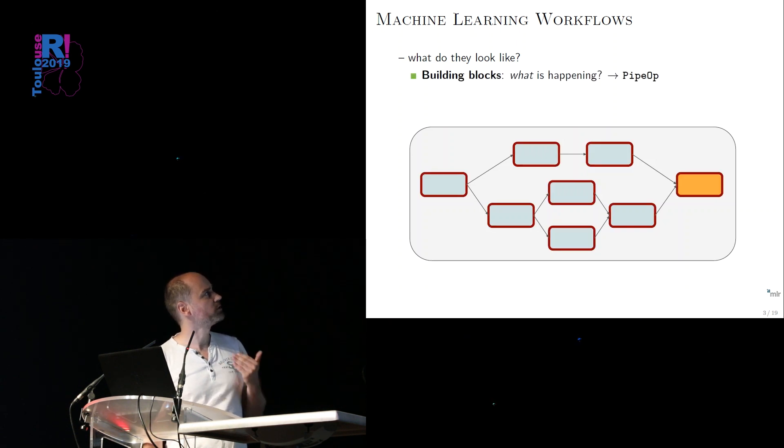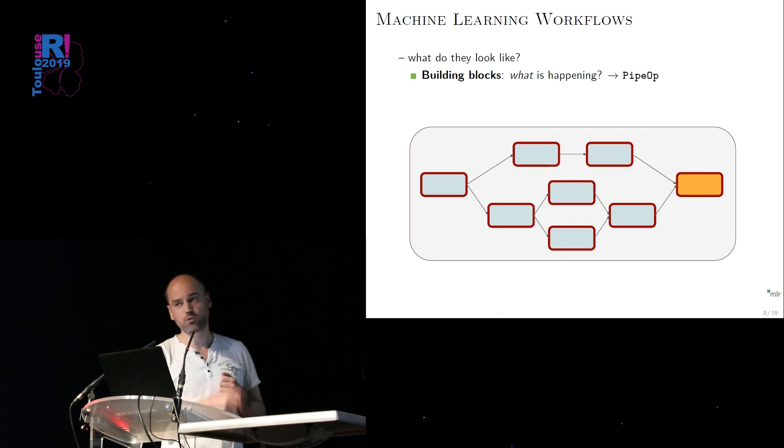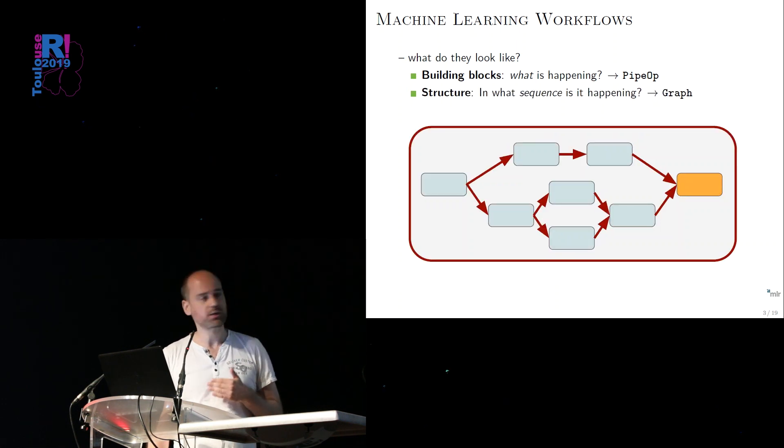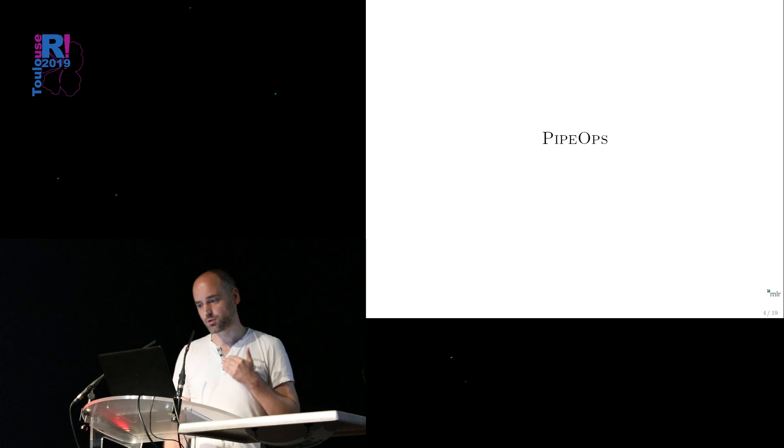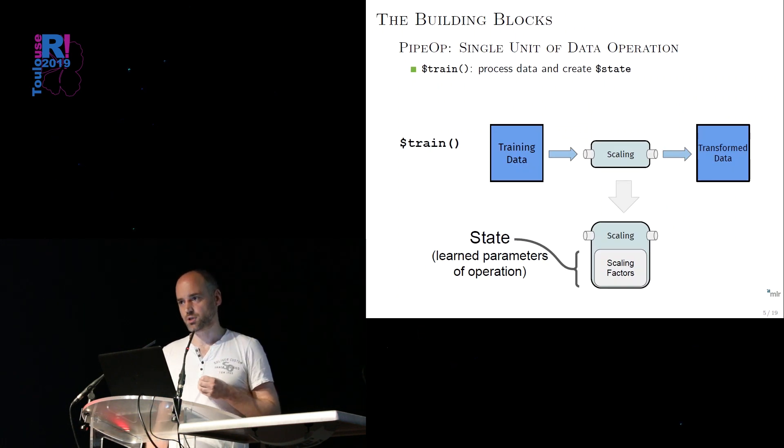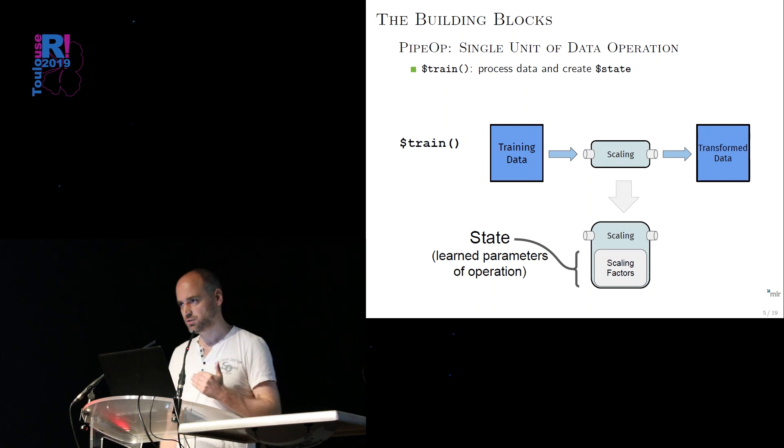So how does that work specifically? We basically have two types of building blocks. We have nodes and edges in a graph, and a node is what we call a pipe operation, and that basically does the data transformation or the learning of the model. And then there's edges between these nodes, and on the edges data and information flows. And what we get at the end as a complete structure is such a graph, with the pipe ops as nodes and the edges representing the data flow. Let me walk you through that a bit more slowly. How does that work in particular for the nodes? So the nodes are the single units of data operation. That's what we call a pipe op. And a pipe op, you can compare very much to a normal machine learning algorithm. So first of all, it's a data transformation operation. Data goes in, it gets transformed, and data comes out.